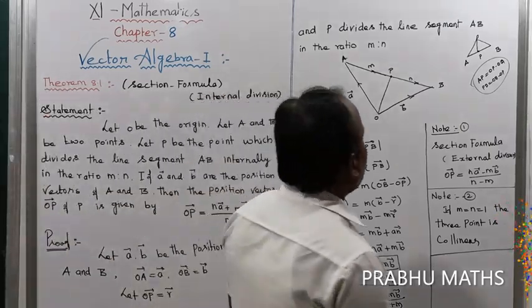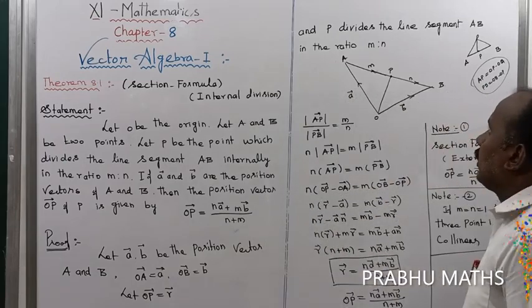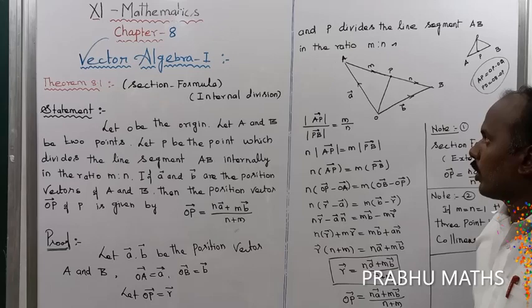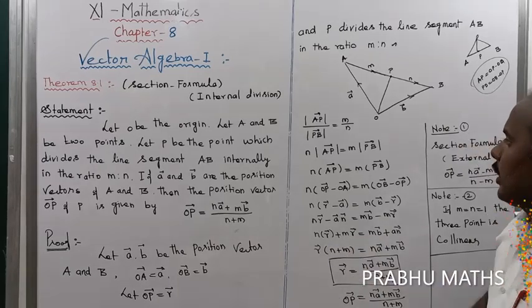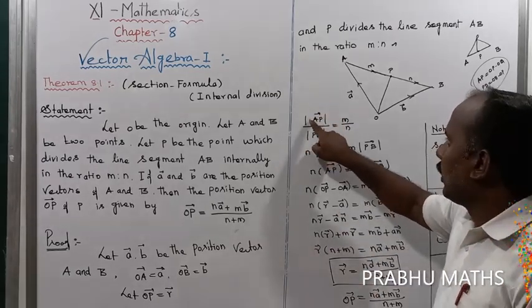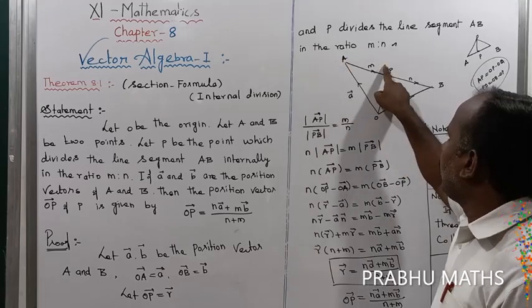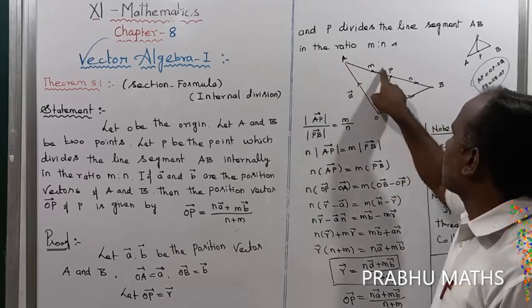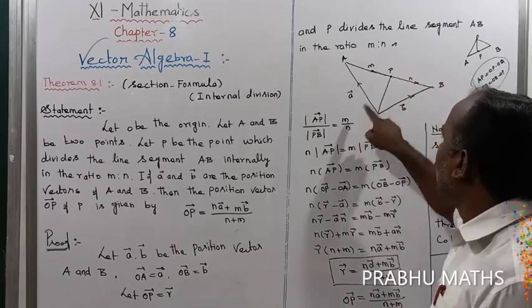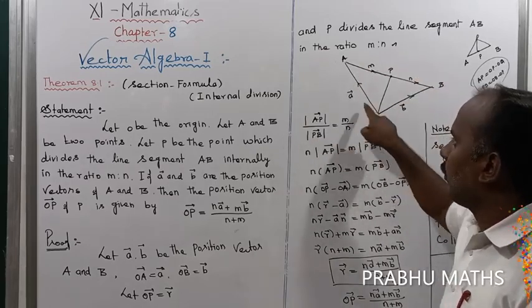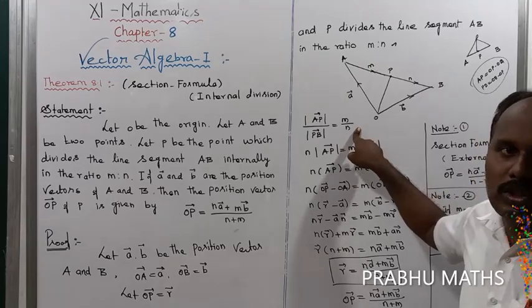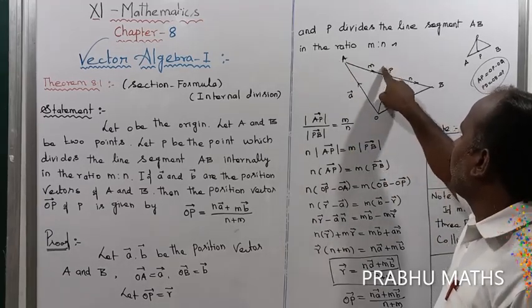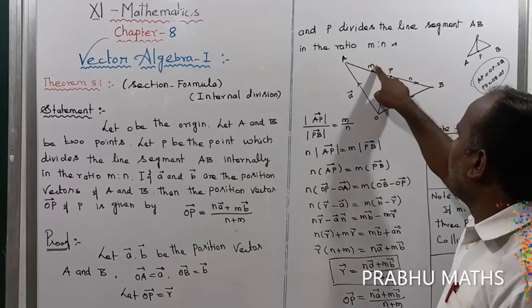P divides the line segment AB in the ratio M to N. Therefore, AP divided by PB equals M by N. That is the ratio concept — AP over PB equals M by N.